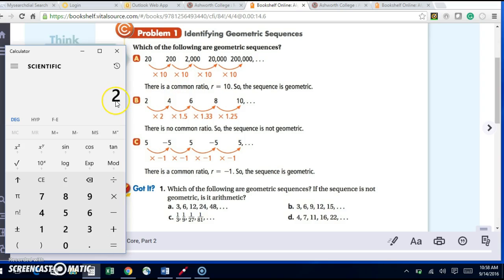And so I can see, well, let's say 4 times 2 is 8. Is 8 my next term? It's not. So I don't have a common ratio. And as you can see, each time I multiply by a different number. Alright, let's look at the next one.